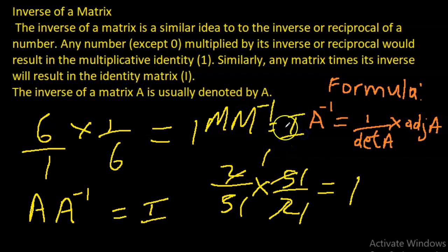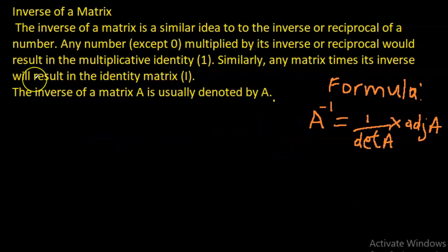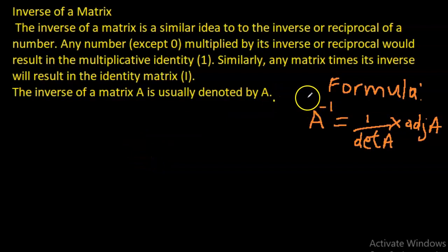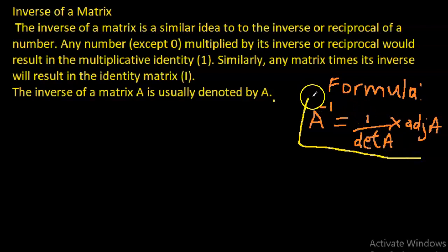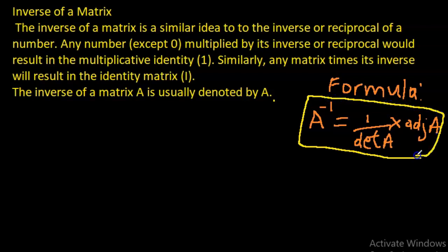Now we want to look at how to calculate the inverse of a matrix. We use the formula: the inverse of a matrix A is one over the determinant of A, times the adjoint of A. In previous videos we looked at how to calculate both the determinant and the adjoint.